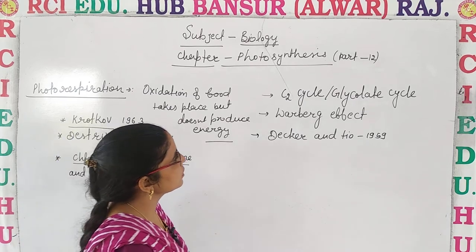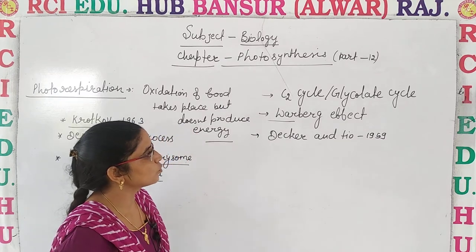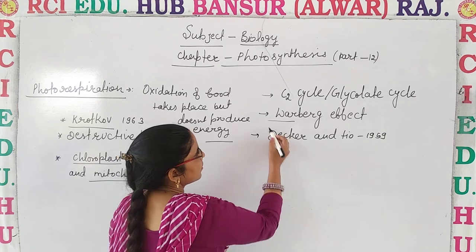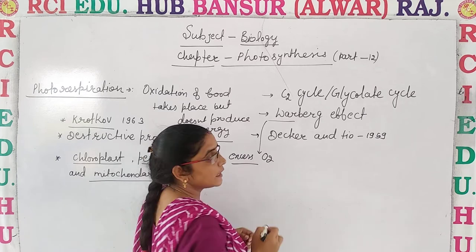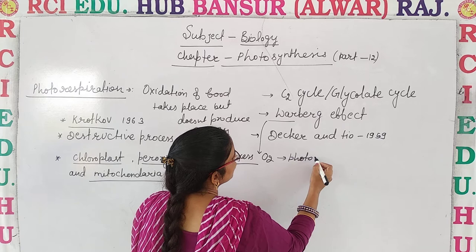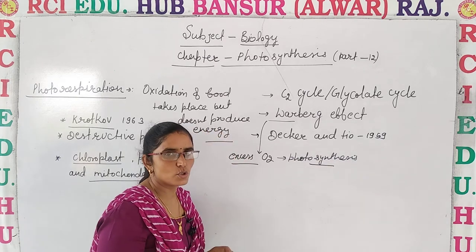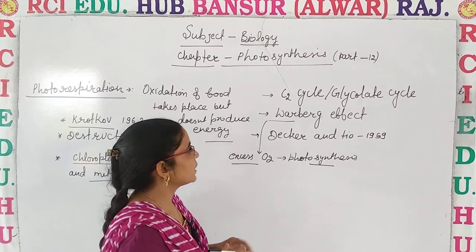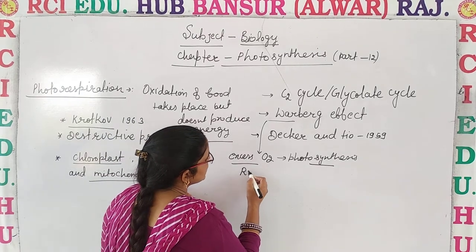This is also discussed as the C2 cycle or glycolate cycle, also called the Warburg effect. Otto Warburg was the first to notice this effect. He observed that when the amount of oxygen increases — that is, in excess of oxygen — it can reduce the rate of photosynthesis. He stated that when the amount of oxygen becomes high, it decreases the rate of photosynthesis.